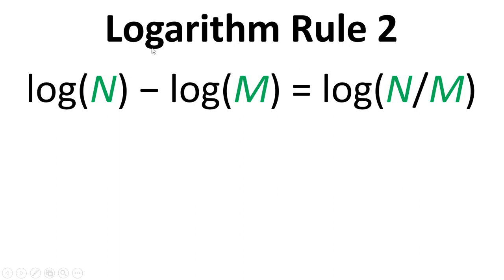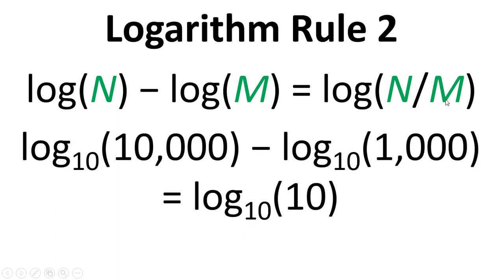The second rule is that if we have the log of n, take away the log of m, that will equal the log of n divided by m. So let's look at this example. Log of 10,000 take away the log of 1,000 will equal the log of 10. This will be 4, that will be 3, and 4 take away 3 equals 1. So again, that works out.